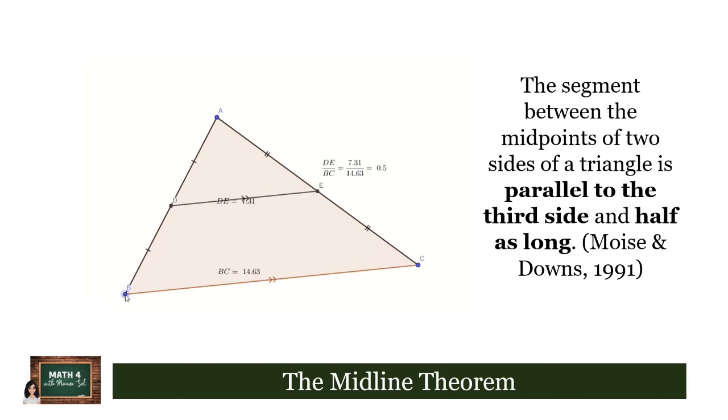So as we noticed, the ratio is constant and it is always 0.5 or one-half. This validates the second part of the theorem that states that the midline is indeed half of the third side.